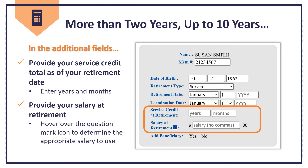If you wish to run a retirement estimate more than 10 years in the future, use the Calculating Your Own Retirement Allowance Fact Sheet available on the New Jersey Division of Pensions and Benefits website. Please note that pension option age factors are subject to change every three years, and you should not file a retirement application based on any long-range estimates.